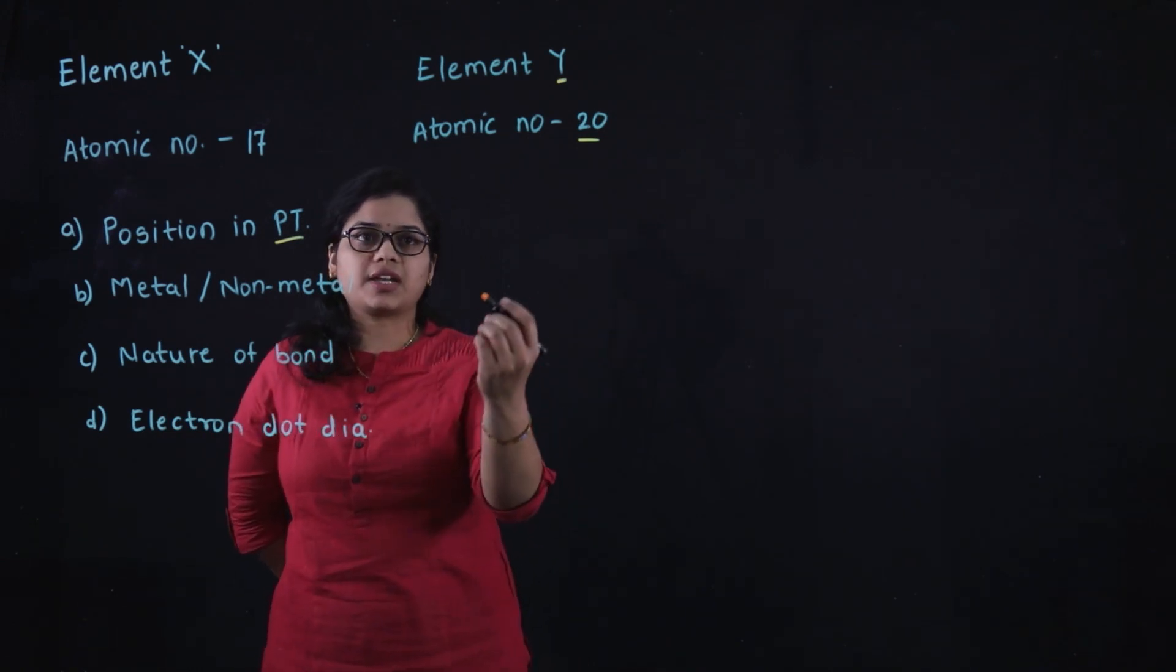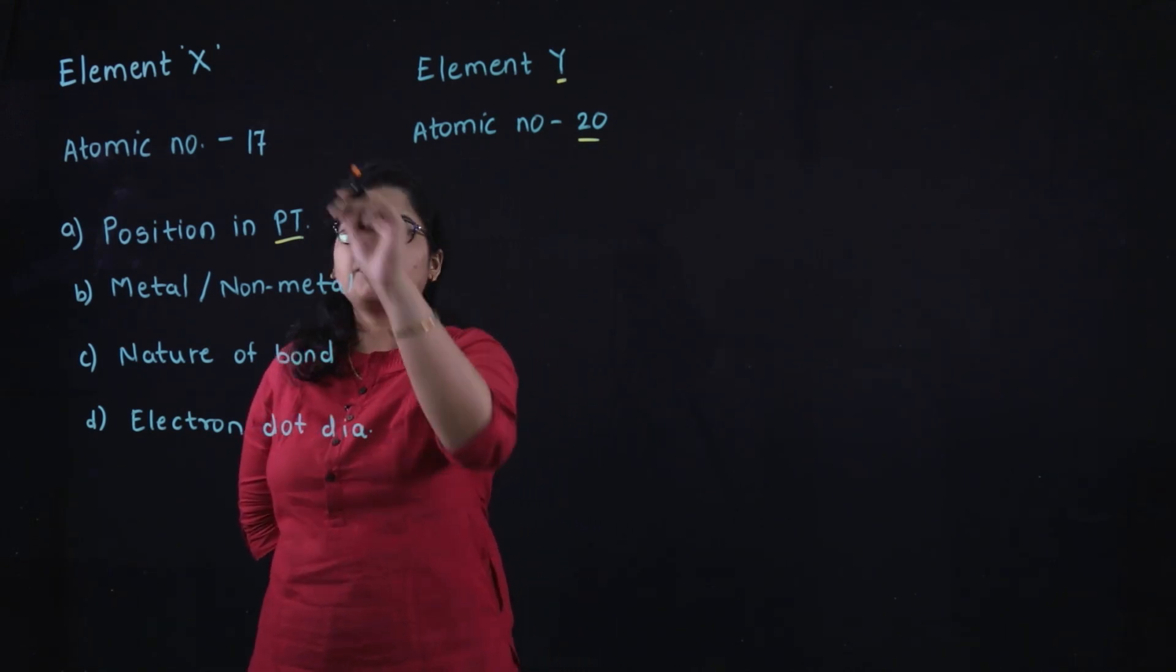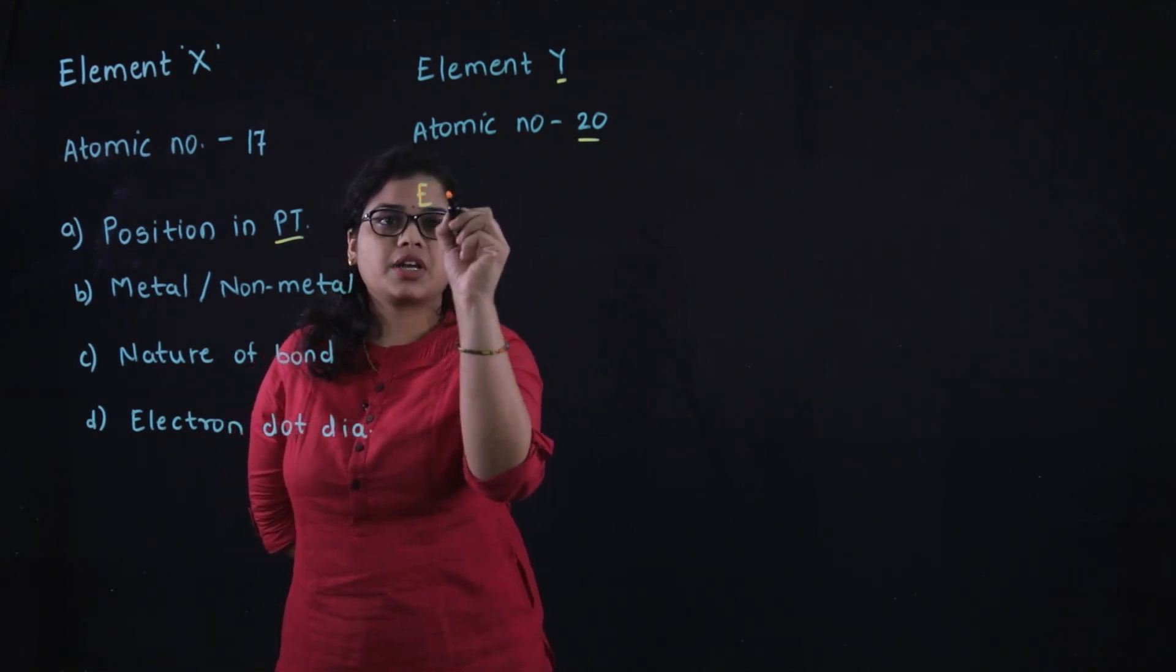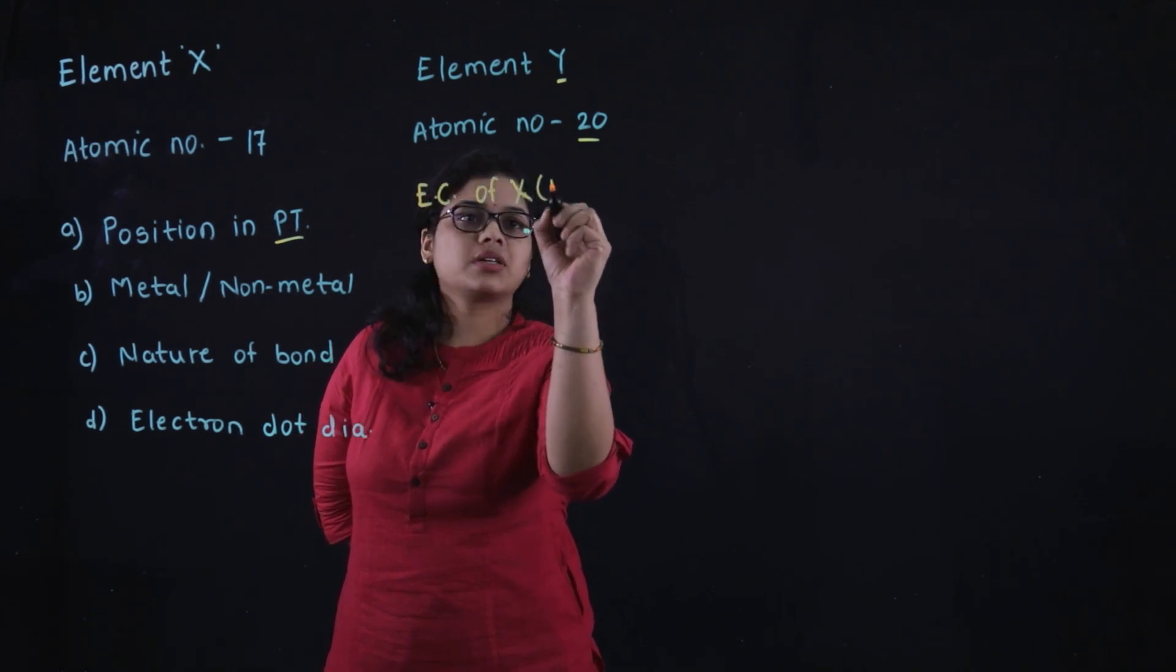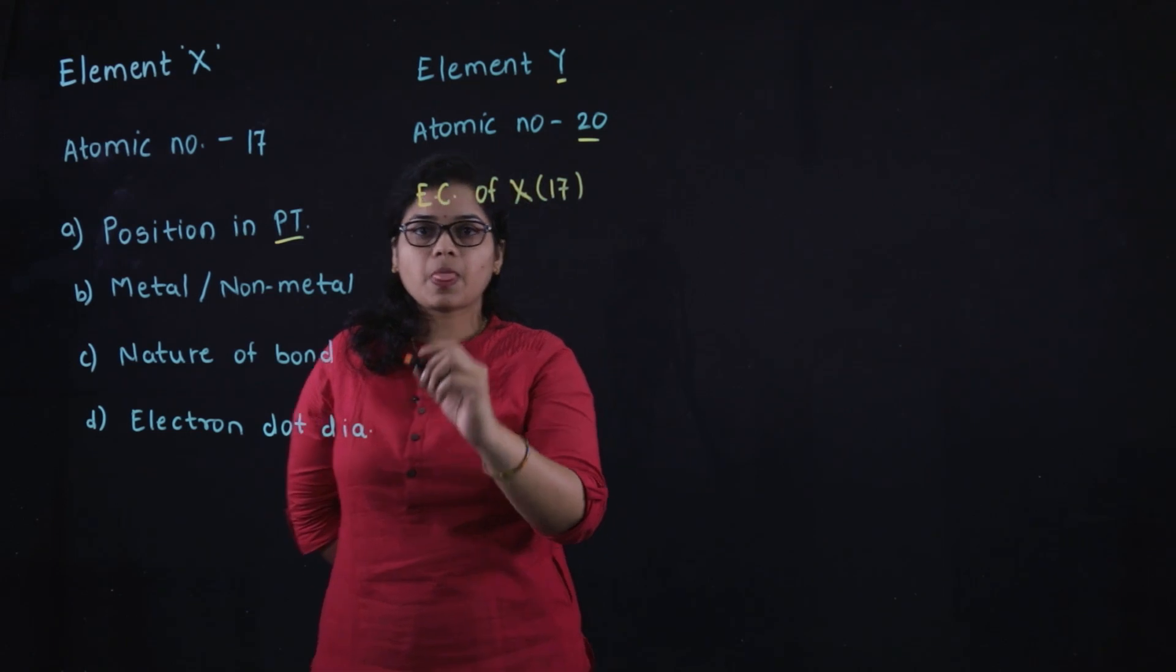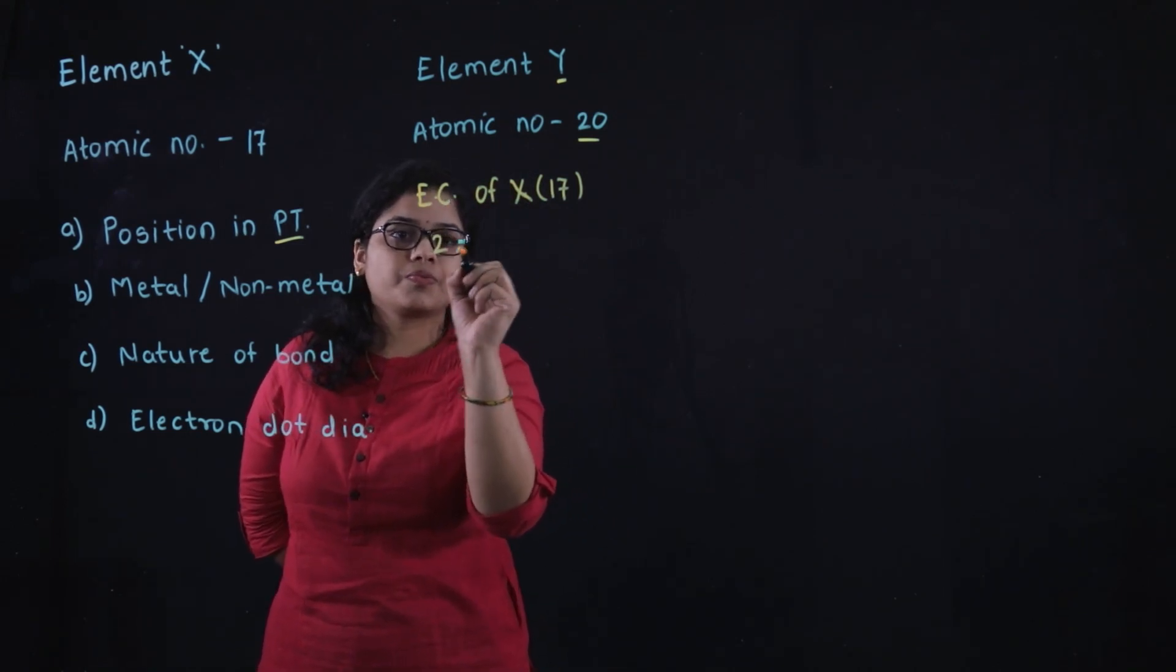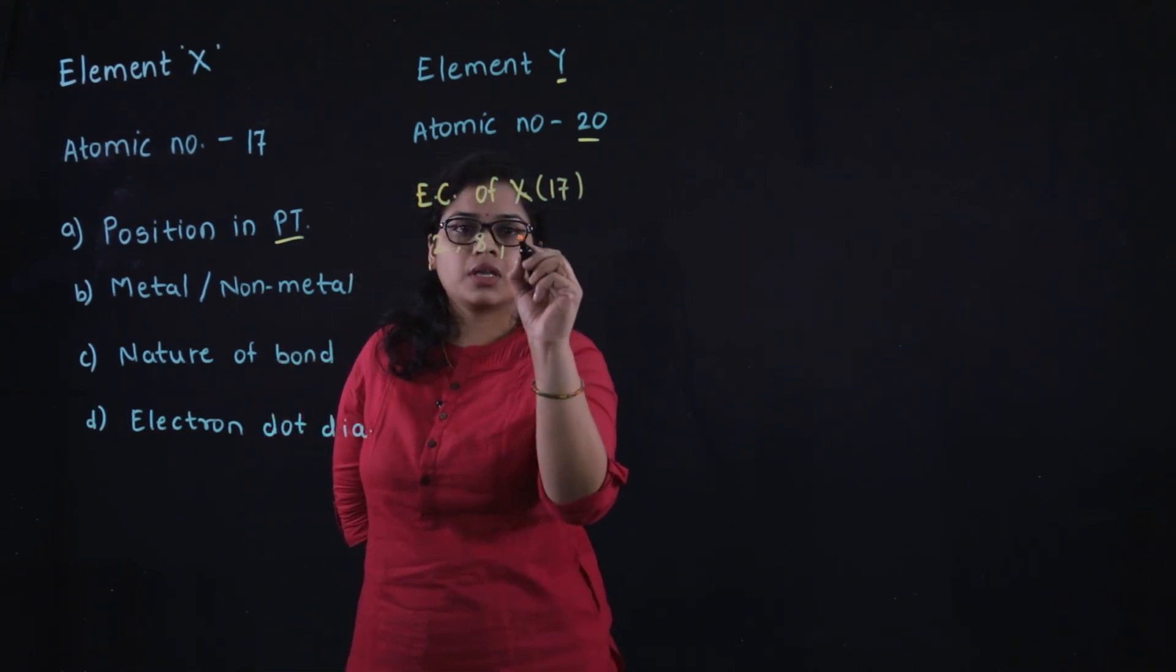Now first write down the electronic configuration of X. The electronic configuration of X with atomic number 17 is 2, 8, 7.